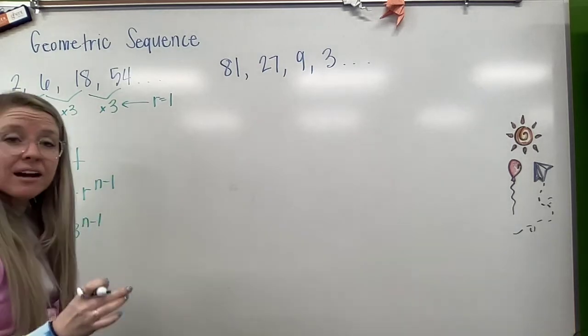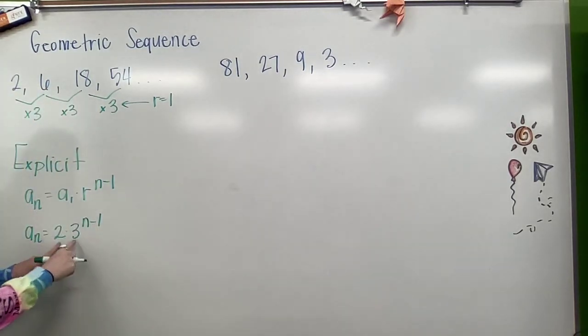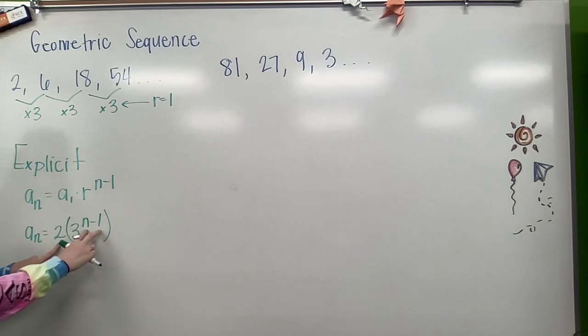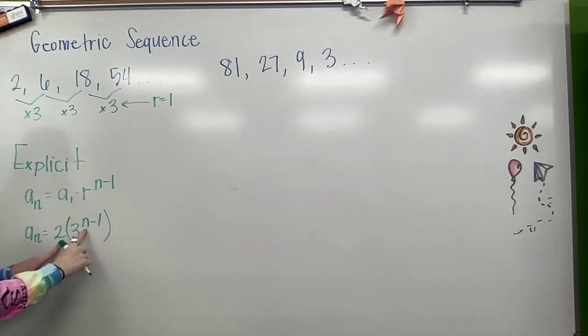And to be very careful here with our order of operations, we're not going to do 2 times 3. It's kind of like this. 3 to the n minus 1, whatever this is. So say we're looking for that fourth step. We plug in 4. 4 minus 1 is 3.